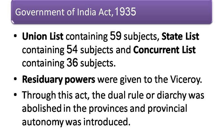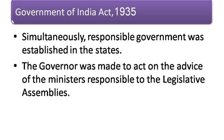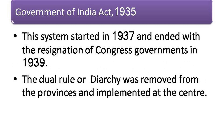Through this act, the dual rule was abolished in the provinces and provincial autonomy was introduced. Simultaneously, responsible government was established in the states. The governor was made to act on the advice of the ministers responsible to the legislative assemblies. This system started in 1937 and ended with the resignation of Congress governments in 1939.